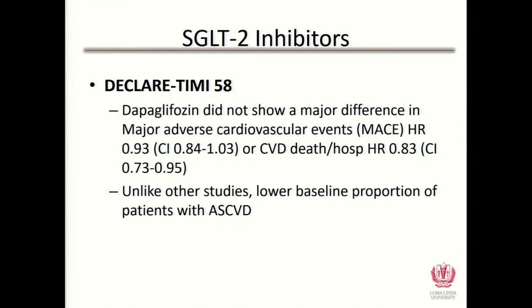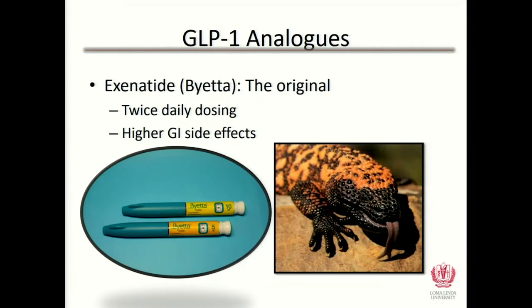Moving on to GLP-1 analogs — I show the Gila monster because a very smart scientist developed the GLP-1s by studying its venom, which I always find cool to share with students and residents. The first was exenatide short-release (Byetta), which had quite significant GI side effects and was dosed twice daily. I only had about two patients on this medication because the GI side effects were significant and many couldn't manage twice-daily dosing.